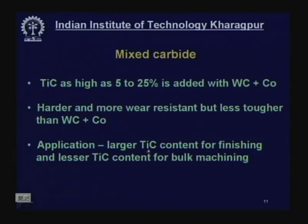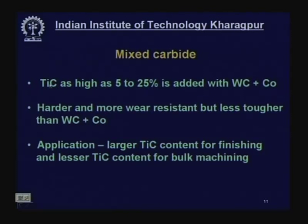Finishing is normally done at high speed, so there is a chance of high temperature. Titanium carbide is very stable at high temperature and helps retain the geometry and sharpness of the cutting edge. On the other hand, lesser titanium carbide (5–10%) is used for bulk machining where cutting force is large but cutting velocity and temperature are lower.